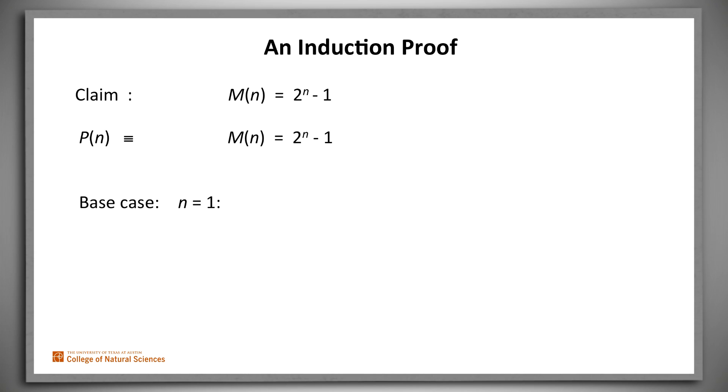So we first prove the base case n equals 1. m of n is 1, which is equal to 2 to the 1 minus 1, which, if n is 1, is 2 to the n minus 1.